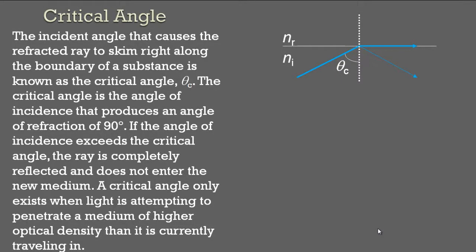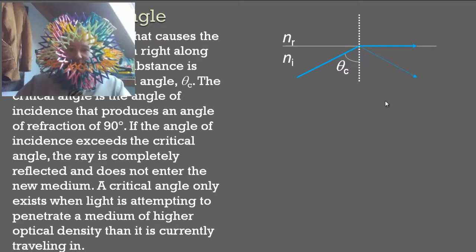The incident angle that causes the refracted ray to skim right along the boundary of a substance is known as the critical angle, which we denote as theta c. The critical angle is the angle of incidence that produces an angle of refraction of 90 degrees. So the refracted angle will be 90 degrees. Here comes the incidence, we measure from the normal. So the refractive angle, this is going to be here, 90 degrees. If the angle of incidence exceeds the critical angle, the ray is completely reflected and does not enter the new media.